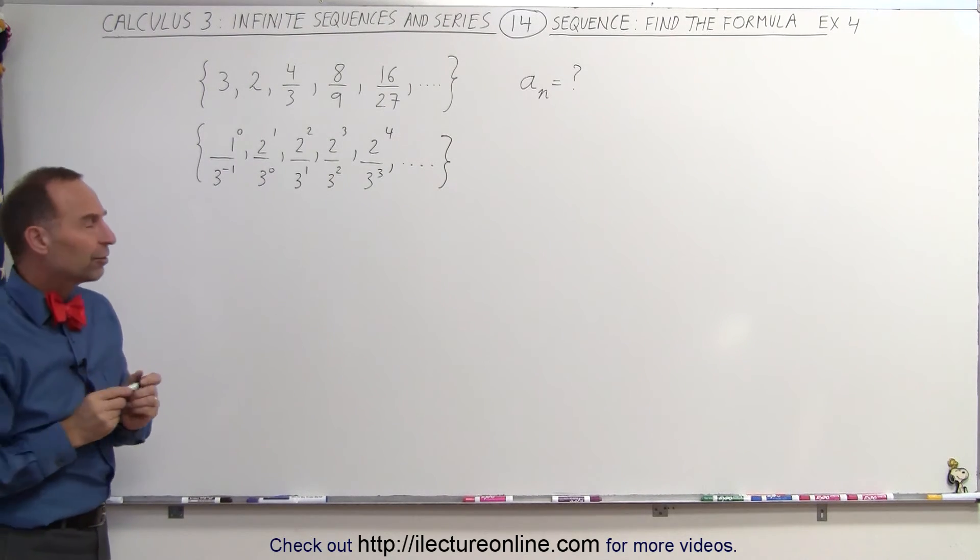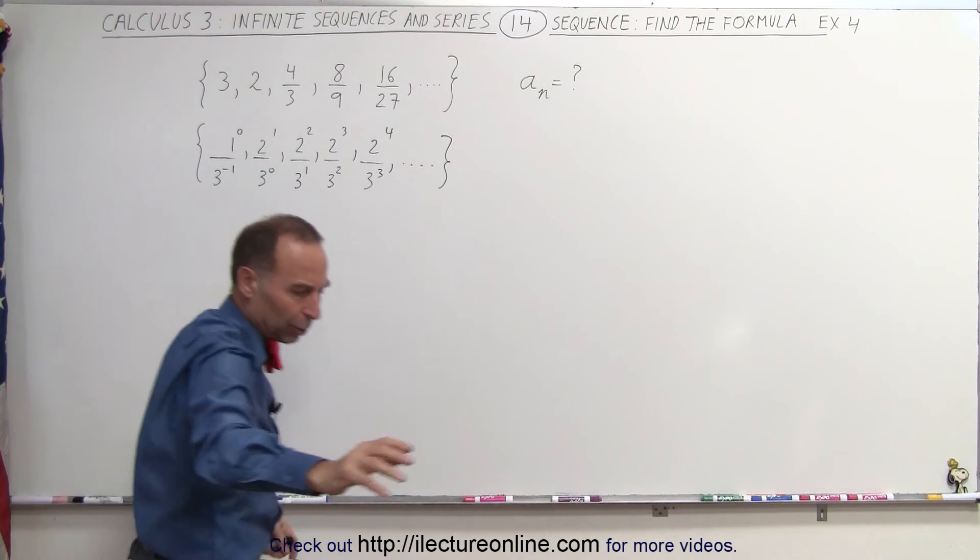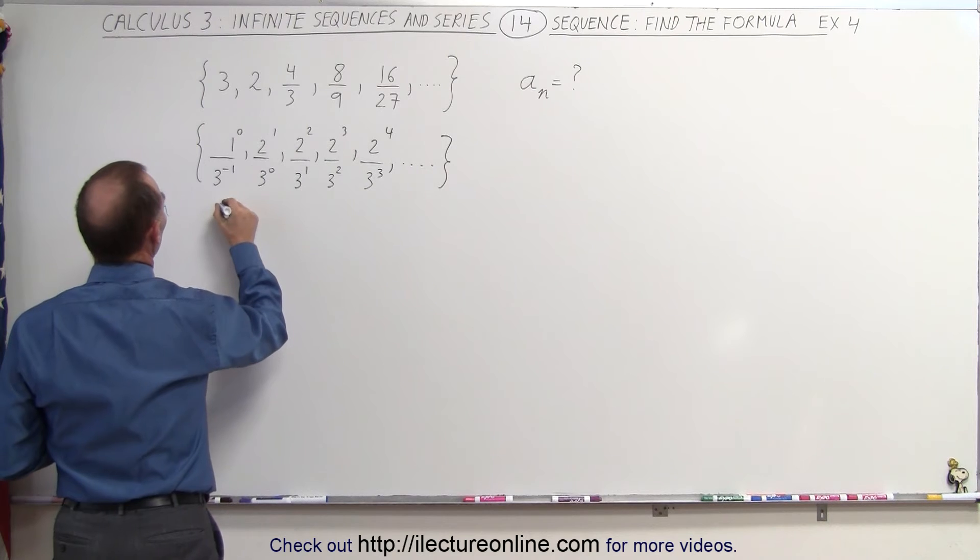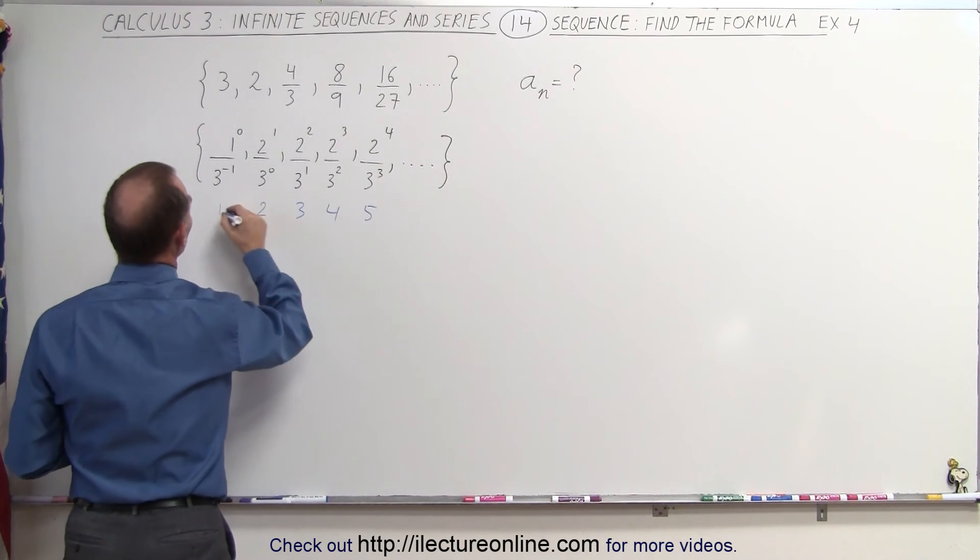So now if I write down the values for n for each of these numbers in the sequence, I need my blue pen right here. So n, that would be equal to 1, 2, 3, 4, 5, and so forth.